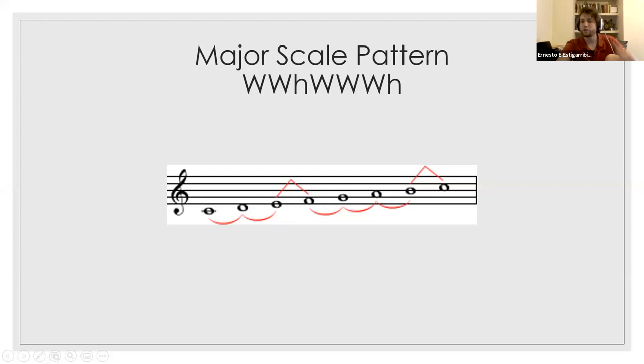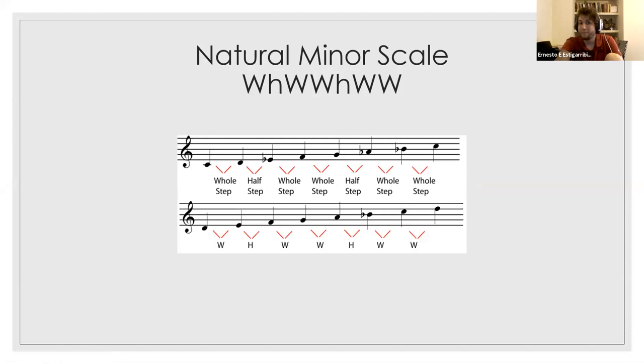All major scales share the same pattern: whole, whole, half, whole, whole, whole, half — there are 12 of them. The natural minor scale pattern is different: whole, half, whole, whole, half, whole, whole. There are several types of minor scales, but this is the natural minor. Check the second page of your workbook — you have four minor scales to complete for homework.